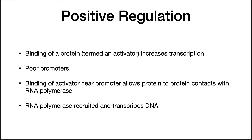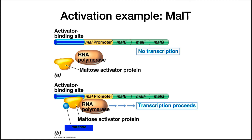The other type of regulation is positive regulation. A protein termed an activator increases transcription when bound to DNA. Typically, these operons have poor promoters — they're not as easily recognized by RNA polymerase. Binding of the activator near the promoter allows protein-protein contacts with the RNA polymerase. Thus, the activator recruits RNA polymerase to the operon and increases transcription. An example of positive regulation is the maltose operon. The malt protein is an allosteric protein that activates when maltose is bound to it. It then binds to its site on the DNA and recruits RNA polymerase to the maltose promoter. RNA polymerase then transcribes the operon.